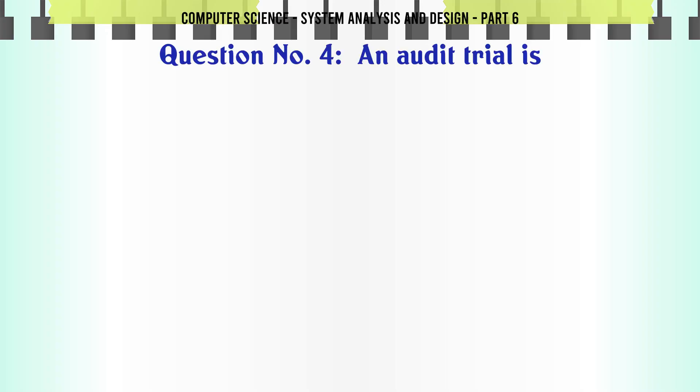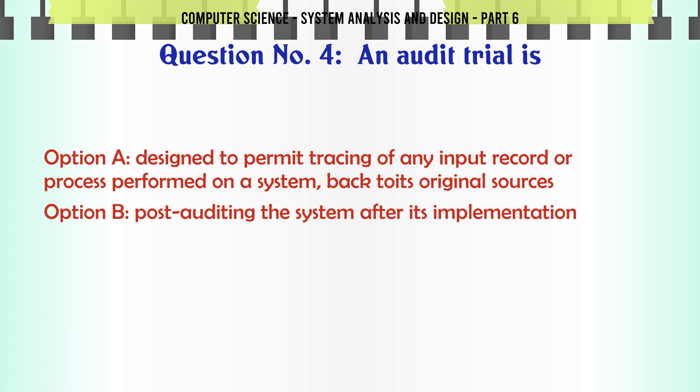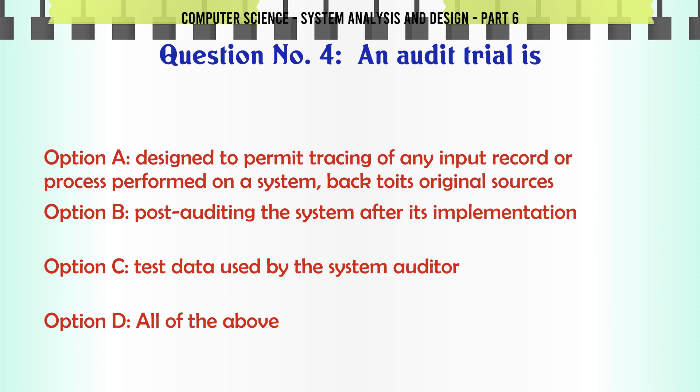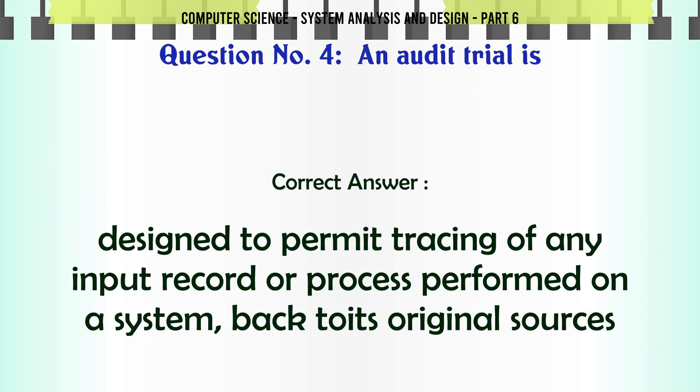An audit trial is: A. Designed to permit tracing of any input record or process performed on a system back to its original sources, B. Post auditing the system after its implementation, C. Test data used by the system auditor, D. All of the above. The correct answer is: Designed to permit tracing of any input record or process performed on a system back to its original sources.